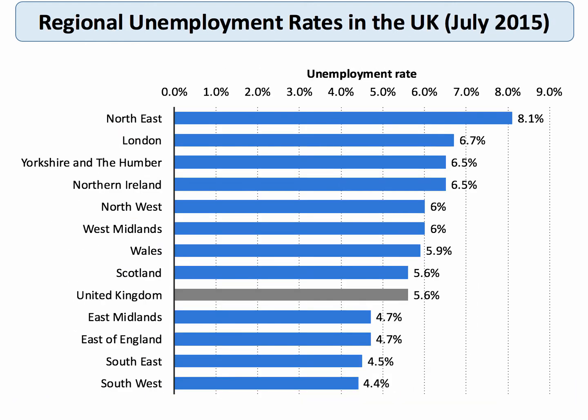If we disaggregate and go into the UK at regional level, we get some interesting figures. This data is from last year, when the unemployment rate in the UK was 5.6% — it's now a bit lower. You can see the regional breakdown: the Southeast and the Southwest have the lowest unemployment rates, less than 5%.